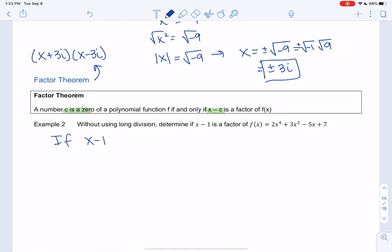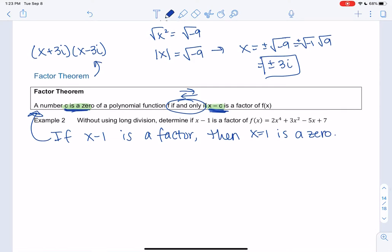So if x minus 1 is a factor, then 1 is a 0. That's what the theorem tells me. If 1 is a 0, then x minus 1 is a factor, or if x minus 1 is a factor, then x equals 1 is a 0. And the if and only if is what's telling me I can go in either direction, and it's still true. So I could use long division and check if I get no remainder, but I could also use this theorem. So if it's a 0, I should be able to plug in 1, and I should get 0.